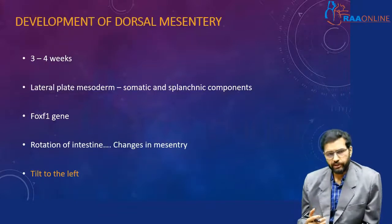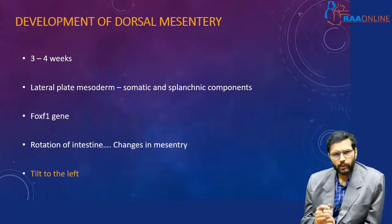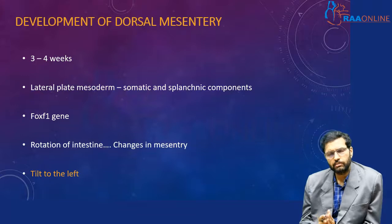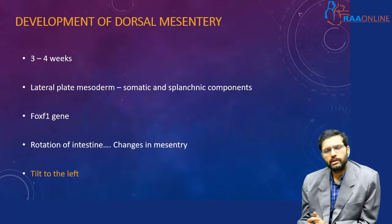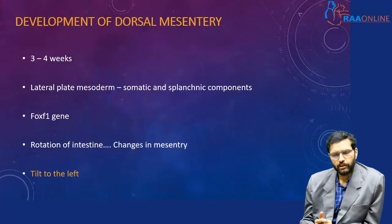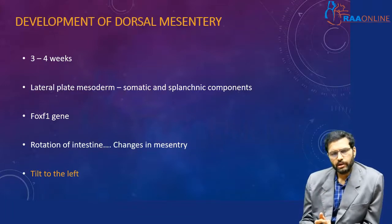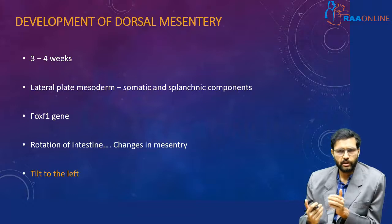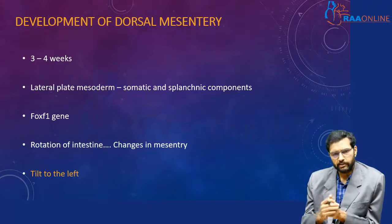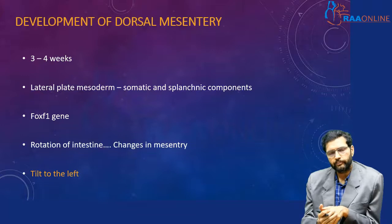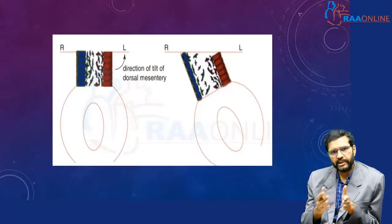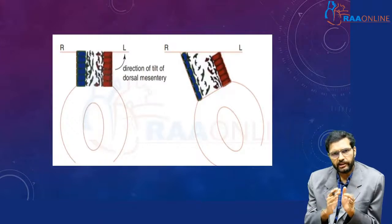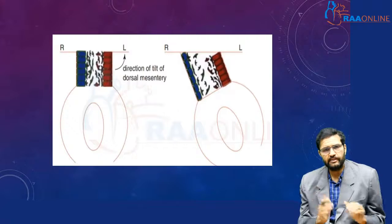Development of the dorsal mesentery occurs by around three to four weeks, by which time the lateral plate mesoderm splits into somatic and splanchnic components, mediated by the FOXF1 gene. The rotation of the intestine is dependent upon changes in the mesentery. The mesentery has a right and a left side — mesenchymal cells on the right side are sparse and cuboidal, whereas those on the left are more dense and columnar. This increased density on the left side causes a tilt towards the left, which initiates gut rotation.